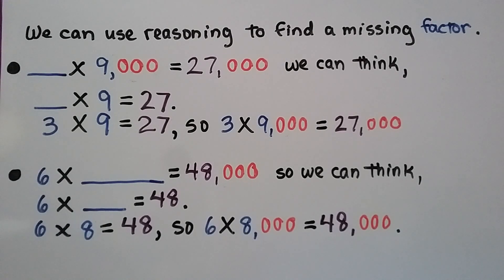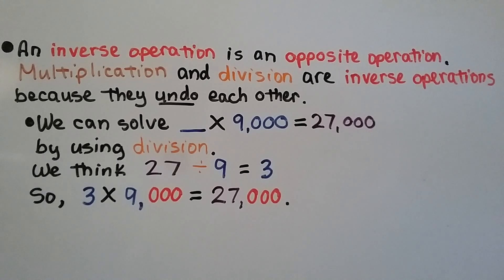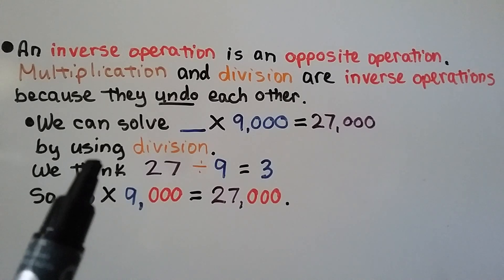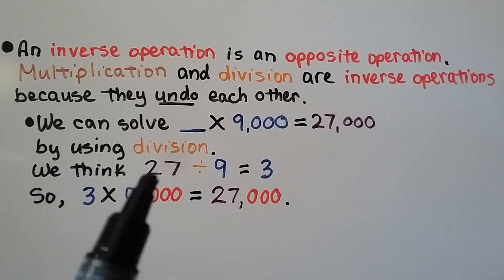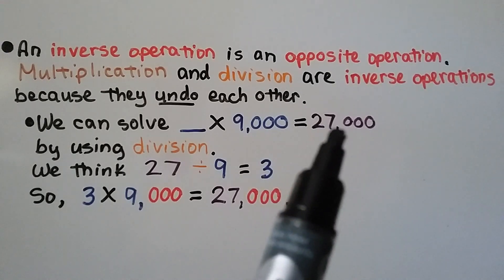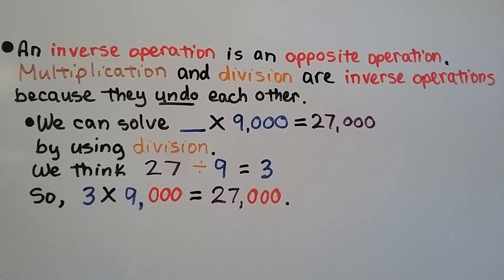Since 6 times 8 equals 48, it must be 6 times 8,000 to equal 48,000. An inverse operation is an opposite operation. Multiplication and division are inverse operations because they undo each other. We can solve some number times 9,000 equals 27,000 by using division: 27 divided by 9 equals 3, so 3 times 9,000 equals 27,000.